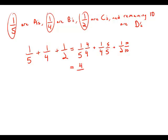And this will give me four over twenty plus five over twenty plus ten over twenty, which adds up to nineteen over twenty.